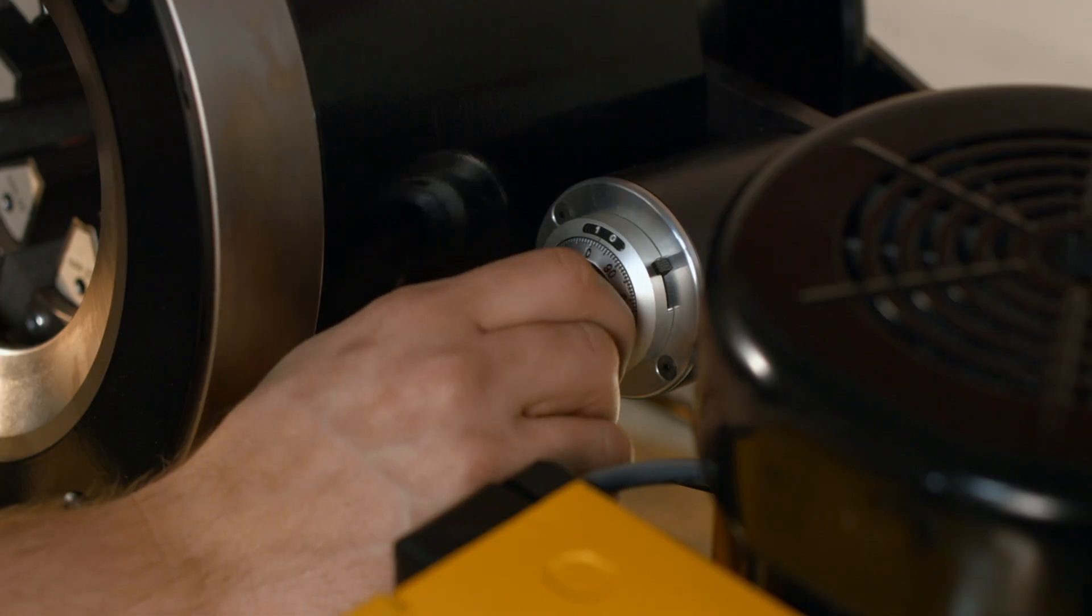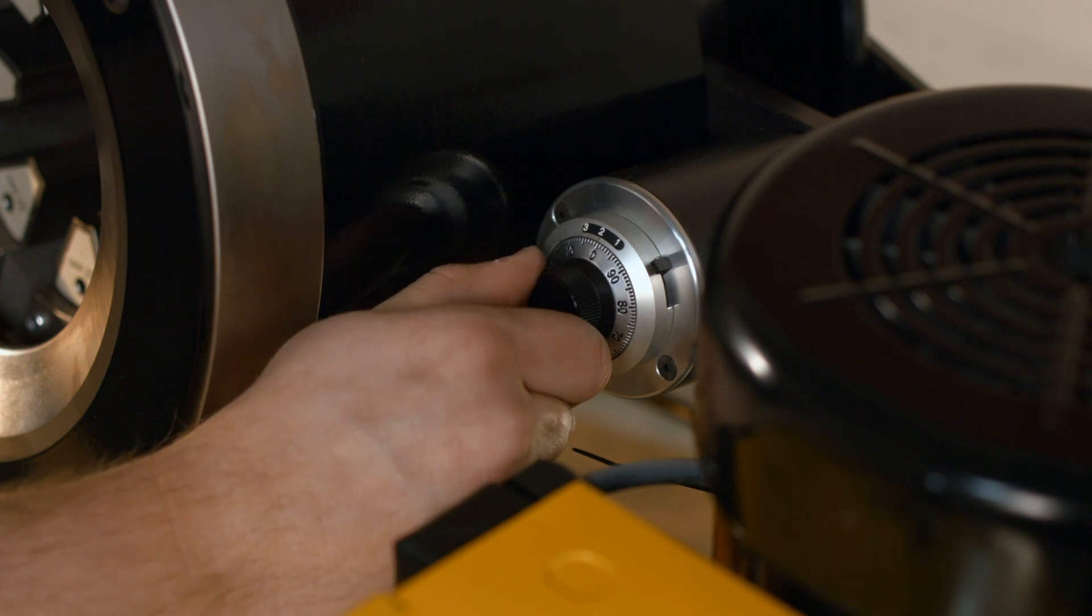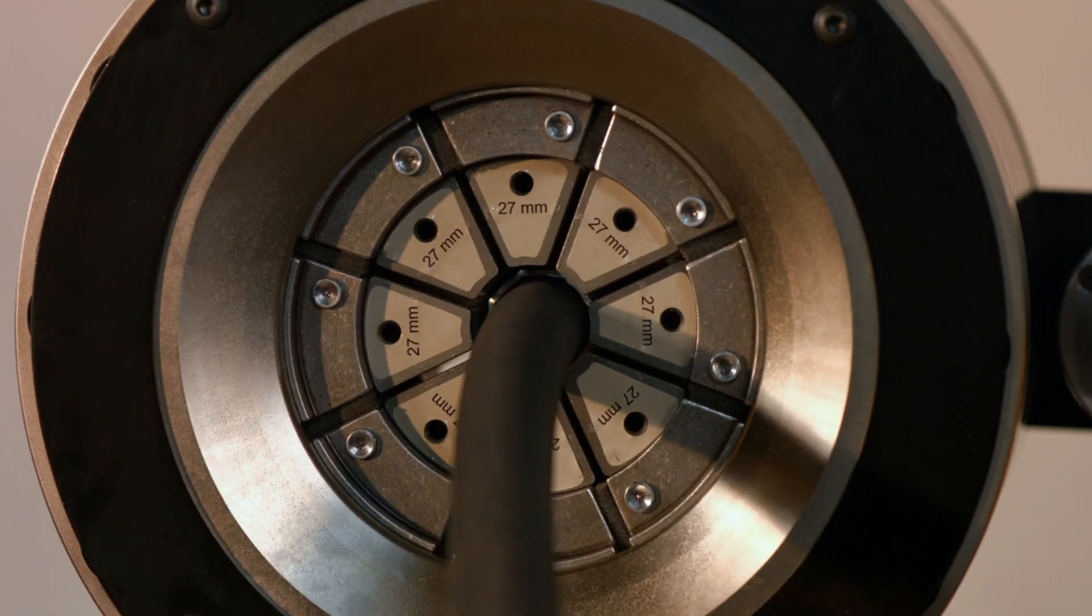If necessary, the crimp size can be adjusted by making small adjustments on the unit's micrometer. Once calibrated, you can make repeated crimps quickly and easily.